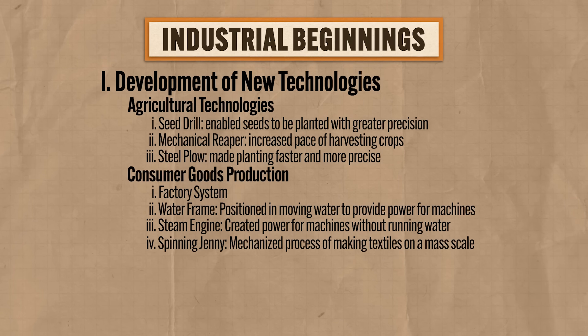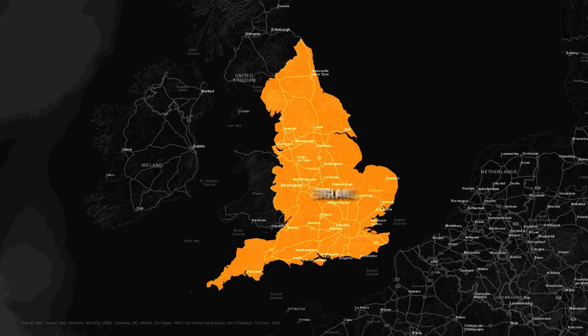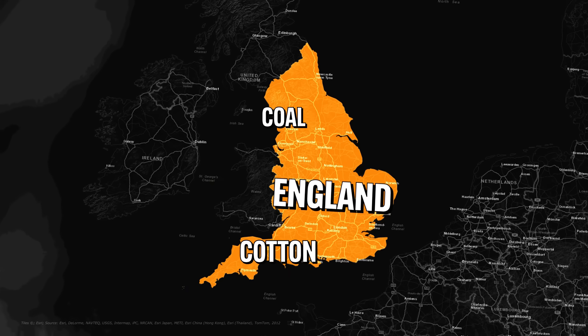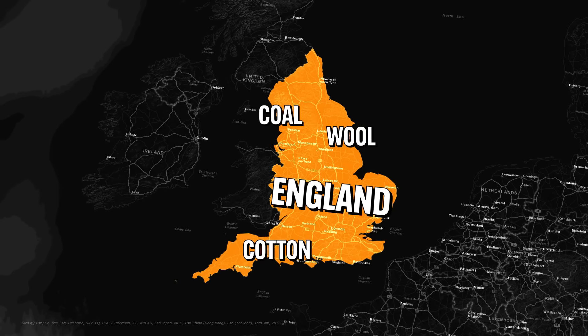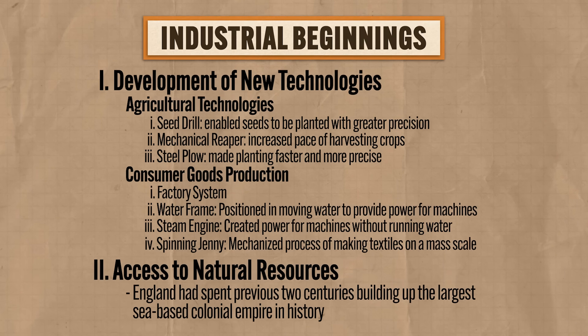The second reason the Industrial Revolution began when and where it did was abundant access to natural resources. The process of industrialization began in England precisely because they had access to abundant natural resources like coal, cotton, and wool. England had abundant coal deposits to power their steam engines. But England didn't have all the natural resources they needed within their own island — however, they had spent the previous couple of centuries building up the largest sea-based colonial empire in history. Since not much cotton was to be found in England, they converted much of India's colonial economy into a cotton exporter to keep those textile factories churning.